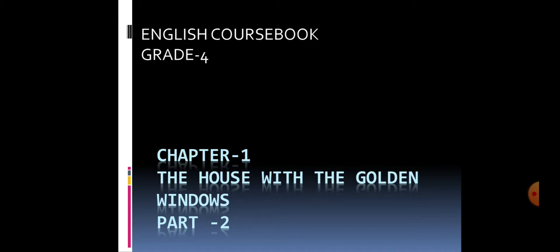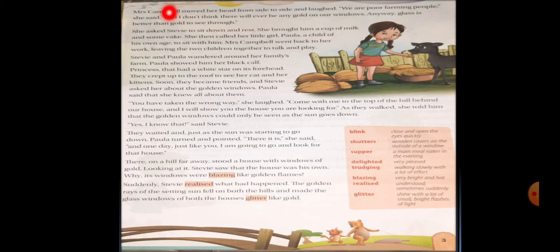So what will happen after that? We will get to know after reading the other two pages. Mrs. Campbell moved her head from side to side and laughed. "We are poor farming people," she said, "and I don't think there will ever be any gold on our windows." She laughed because there were no golden windows. So she said we are poor people, we don't have enough money to make our windows gold in color. Anyway, glass is better than gold to see through.